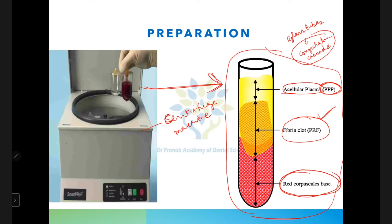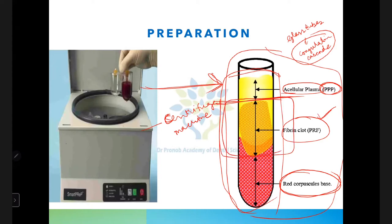After centrifugation, the blood has turned into three layers. The top layer — platelet-poor plasma — should be eliminated. We need the fibrin clot layer. We cut at the junction of the RBC and fibrin clot layers. Some RBC layer will also appear in the PRF. This part is then used depending on the area — whether an extraction socket or osseous defect.